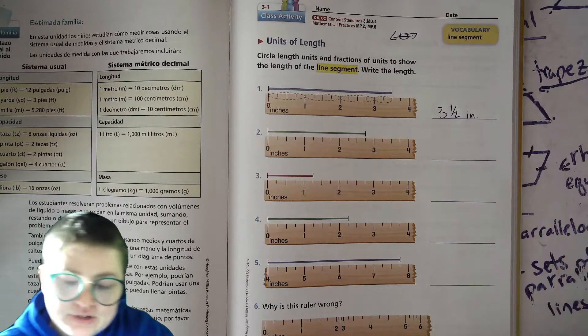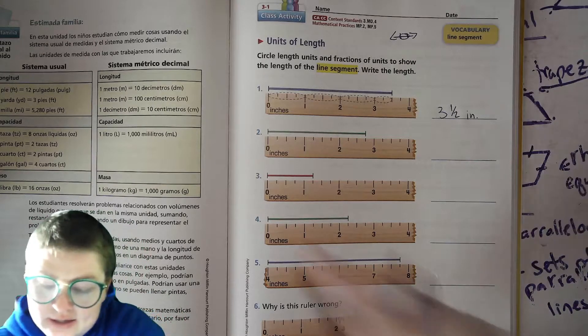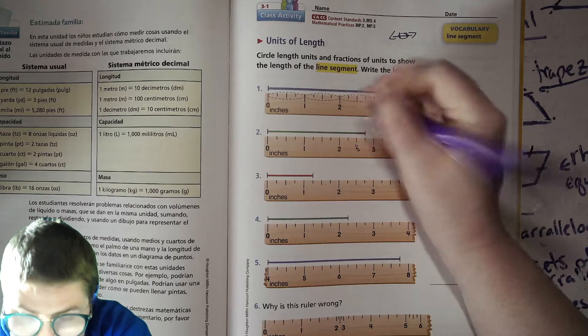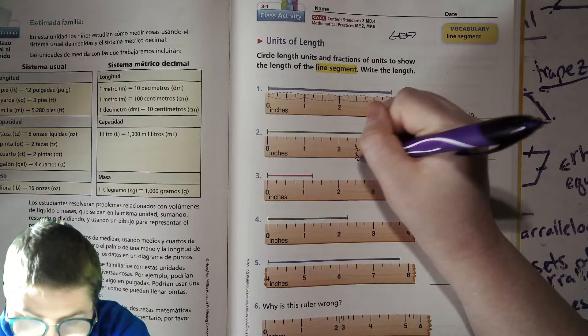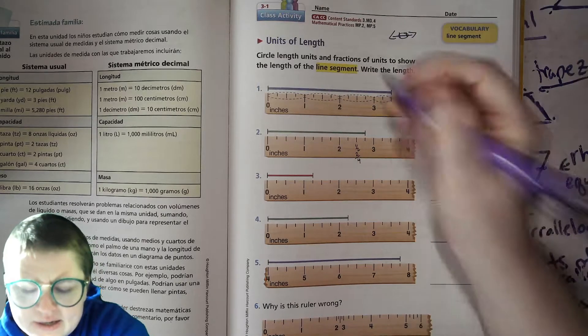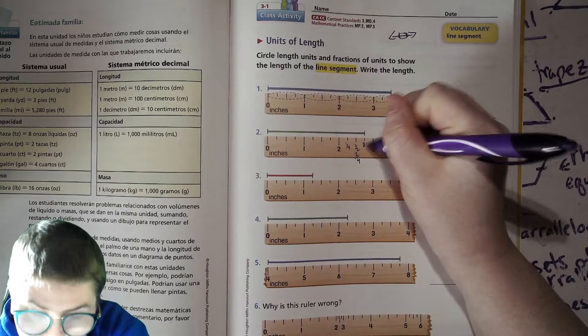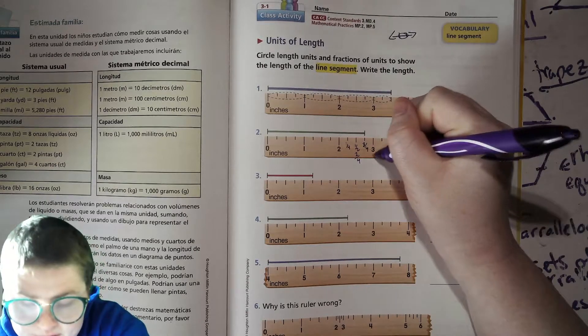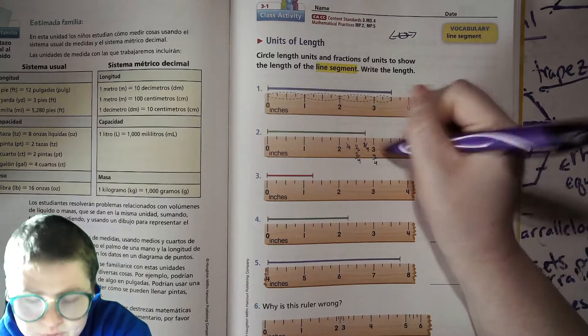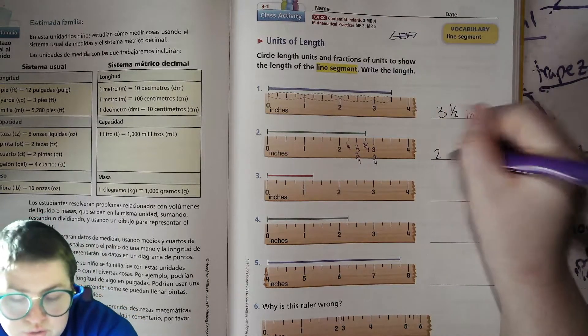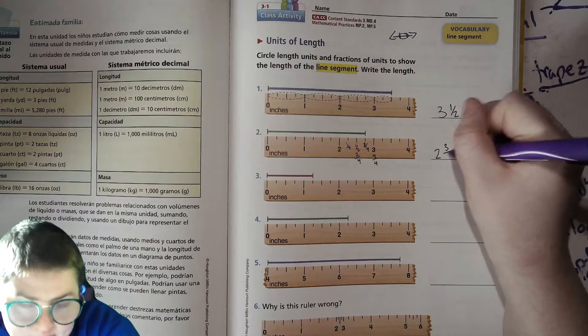You can abbreviate inches by writing I-N. If this part is a half, it could also be seen as two fourths. And so here we have one fourth, and then this would be the third fourth. The fourth fourth would indicate the full next inch and that would be on that part. So this is two and three fourths inches.